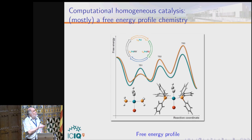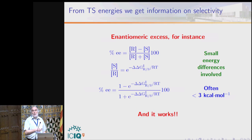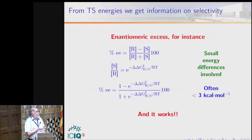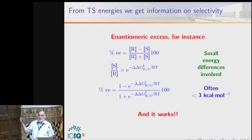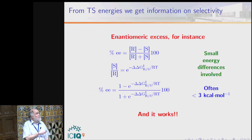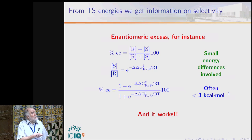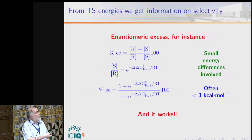What do we do with the free energy profiles? We use mostly the energies of the stationary points. One spectacular example is that we can use these free energy profiles — the energies of the transition states — where we have one transition state going to an R enantiomer and another going to an S enantiomer, and measure the difference in their free energies. By assuming a Boltzmann distribution of the products, we can obtain the enantiomeric ratio and enantiomeric excess.